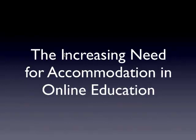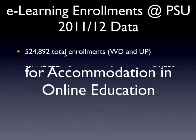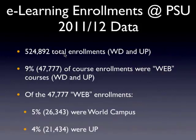Looking at the increasing need for accommodation in online education: in the 2011-12 fall and spring semesters, we offered over 524,000 enrollments, either at the World Campus or at University Park. Nine percent of those enrollments were fully online courses offered at World Campus or University Park, representing about 10% of our total enrollments.